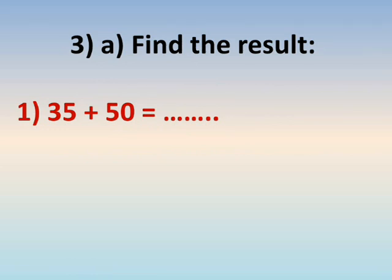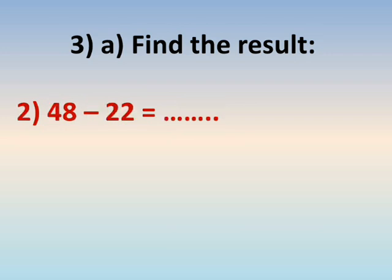Number three A, find the result. Number one: 35 plus 50. Units plus units — five plus zero equals five (any number plus zero equals the same number). Tens plus tens — three plus five equals eight. The answer is eighty-five.